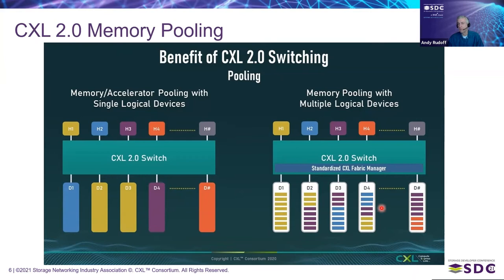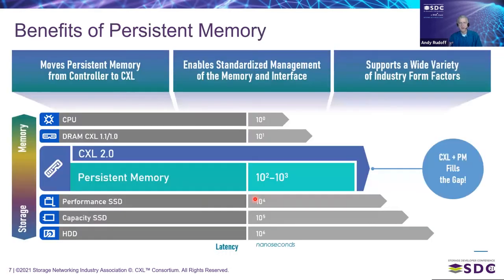On the right is a more flexible, more powerful version of pooling where you have multiple logical devices, or MLDs, where you can take some of their capacity and assign them to hosts. This gives you a finer granularity of what capacity can be given to a host. This is all made possible by the CXL fabric manager, which is another part of the CXL 2.0 spec — it controls what goes where and how this gets configured and set up.